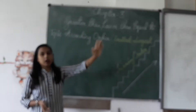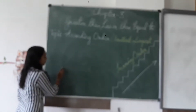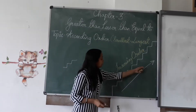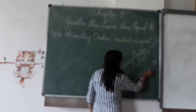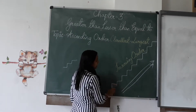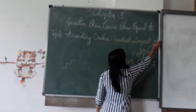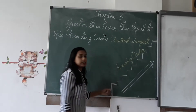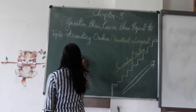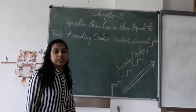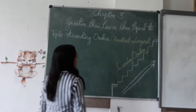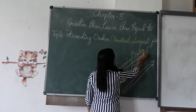Chote se bada — from small to big. You can see here that we are just going upwards. The first step is the smallest, and from there we go to the highest step. So what is the meaning of ascending order? From smallest to largest. It is also called increasing order.